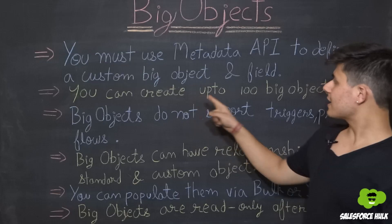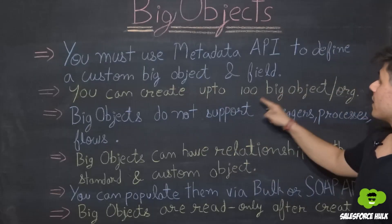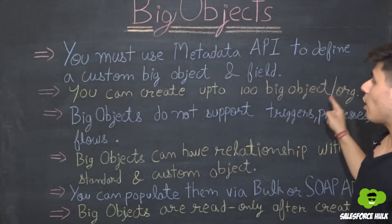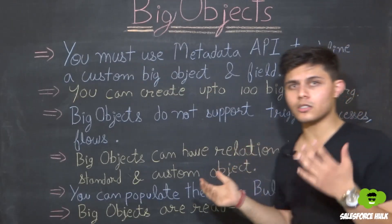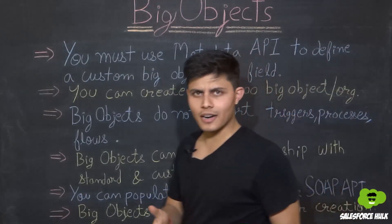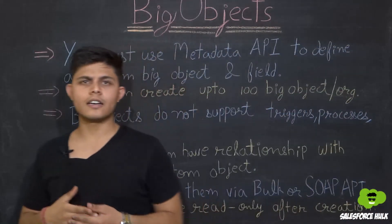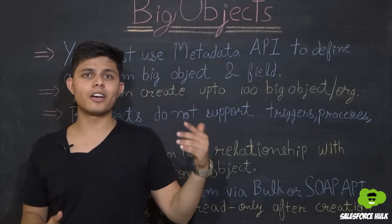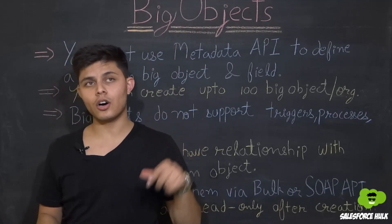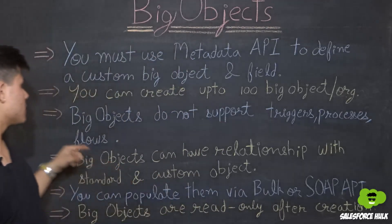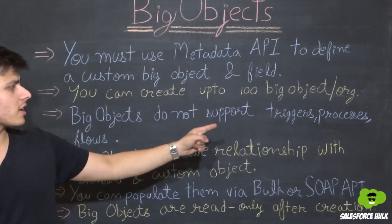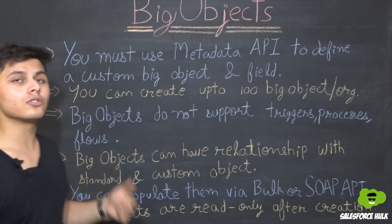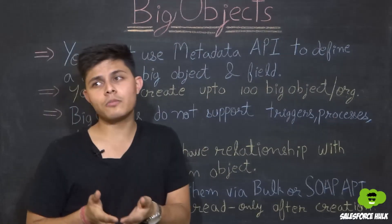You can create up to 100 big objects per org — that's the current limit.